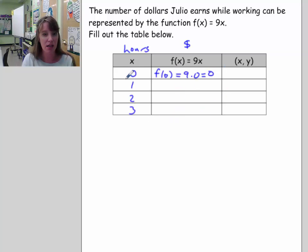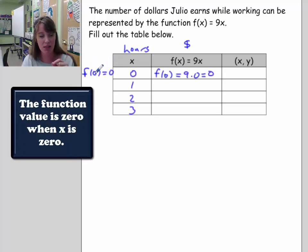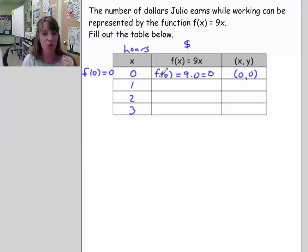Now the way that I evaluate for it is I replace x in both sides of the equation. So I say f(0) is equal to 9 times 0, which is equal to 0. So what this is saying is that f(0) equals 0. The function evaluated when x is 0 is also equal to 0. So this is the coordinate (0,0). f(1) is equal to 9 times 1, which is 9. So f(1) equals 9.